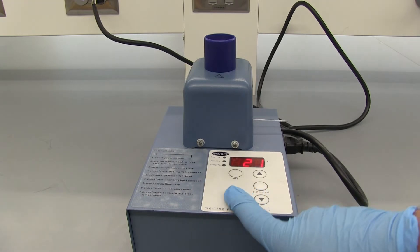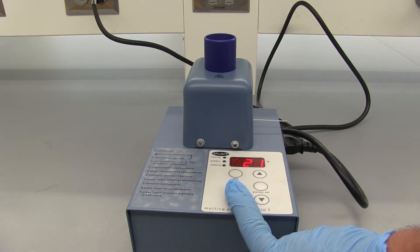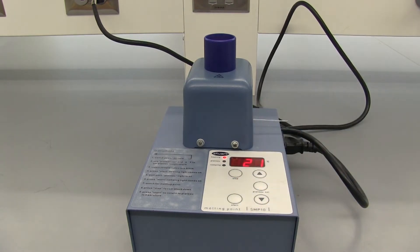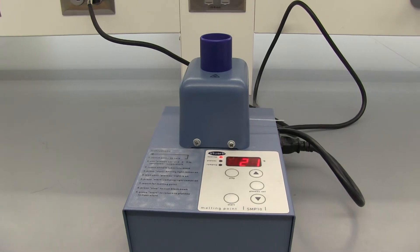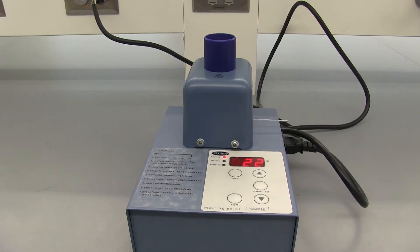In order to start heating we just press the start button. Once the red light comes on we know it's heating up and I will join you once we get our fast melting point. You just want to write the temperature that it starts melting at and the temperature that it fully becomes a liquid at.